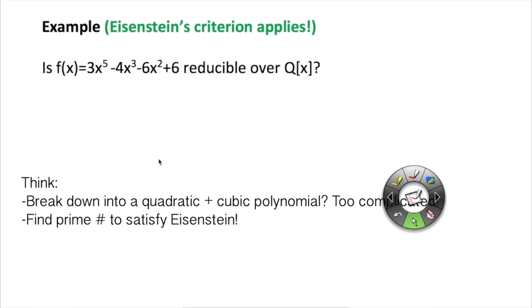All right, so now let's move on to an example where Eisenstein would apply. Is the given polynomial reducible over Q[x]? So our first instinct might be to break it down into a quadratic and cubic polynomial. But that would be quite a complicated process, especially if f(x) is not reducible in the end. So Eisenstein would come in and we would see,